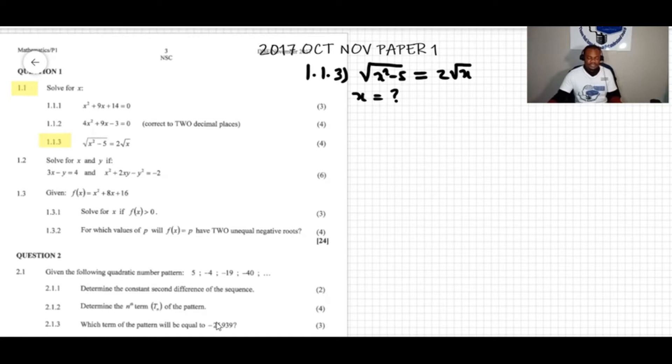So this is what we can do. x squared minus 5 equals 2 root x. We can raise both sides of the equation to the power of 2.